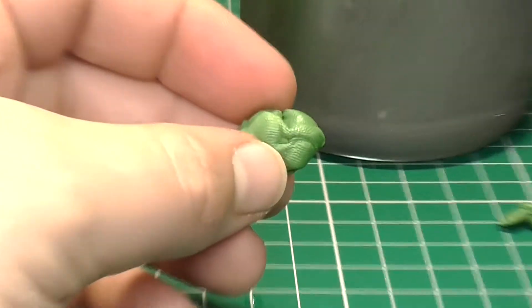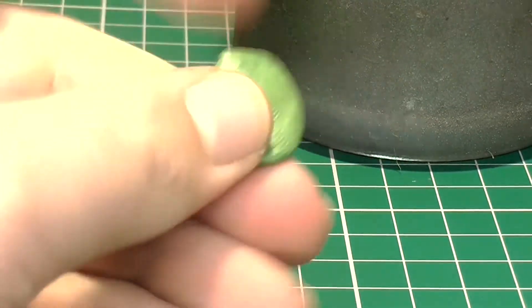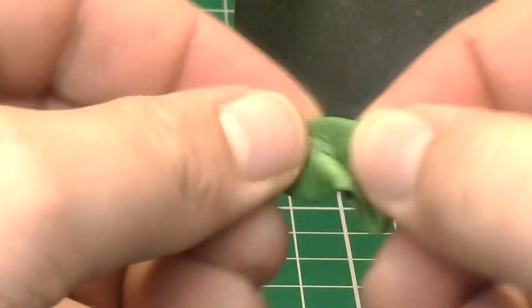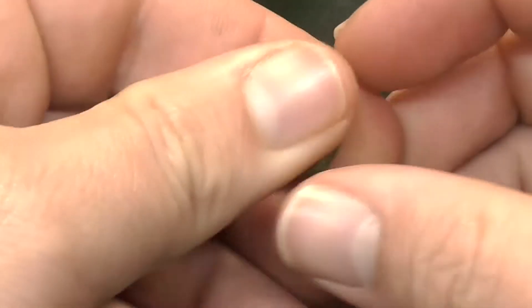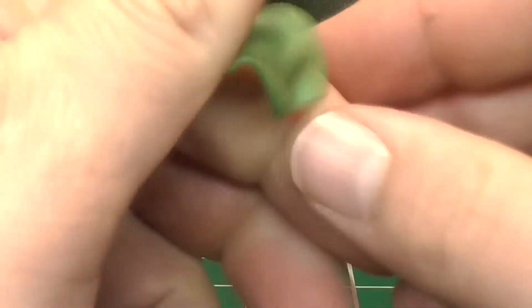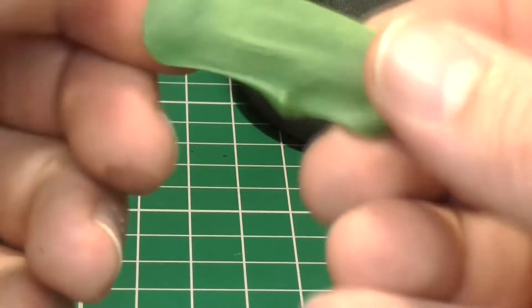Once you've got your green stuff mixed, you can do all sorts with it. You can apply it, you can sculpt it, you can cut it. You can even put it into shapes, and you can let it harden, and then cut it into pieces if you want to. One of the things that I like doing with it, I like sculpting fur, but that is for another video.